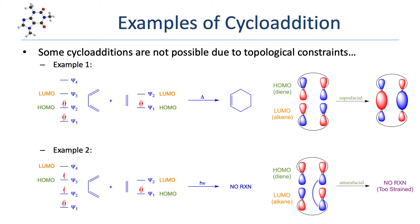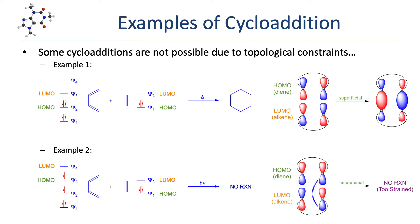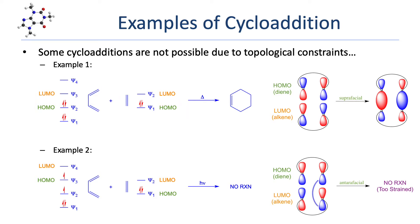Let's take a look at two examples that demonstrate the analysis of cycloadditions at the orbital level. In the first example, we see 1,3-butadiene reacting with ethene to give cyclohexene under thermal conditions. The diene has four pi electrons and four pi molecular orbitals, and the ethene has two pi electrons and two pi molecular orbitals. Under thermal conditions, both molecules are in the ground state. In the diene, both ψ1 and ψ2 are filled; in ethene, only ψ1 is filled. The reaction occurs between the HOMO of one pi system and the LUMO of the other. In the diene, ψ2 is the HOMO, and in ethene, ψ2 is the LUMO. ψ2 is an even-numbered pi molecular orbital, which means it's asymmetric. The combination of two asymmetric orbitals results in a suprafacial topology, easily achieved in the formation of a six-atom ring, so the reaction succeeds.